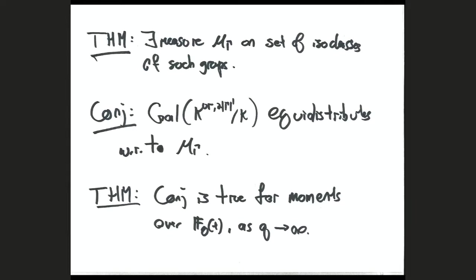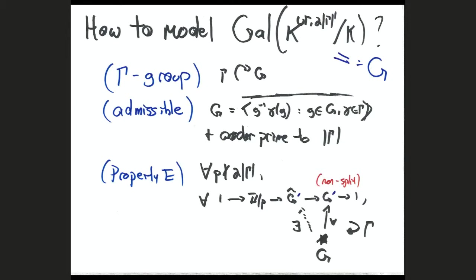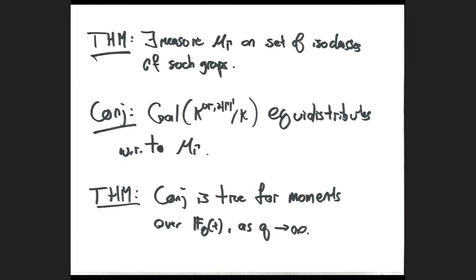In part two of the paper, we set up the same problem in the function field setting and prove it in the q-goes-to-infinity limit. We show the conjecture is true for moments over F_q(t) as q goes to infinity. The measure is built by setting up a notion of random profinite group on n generators, incorporating the gamma action, considering random quotients by certain subgroups, doing this explicitly for n generators, and taking a limit as n goes to infinity.